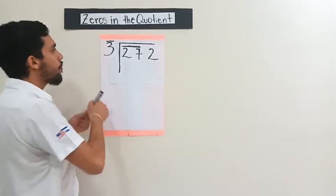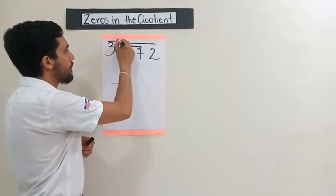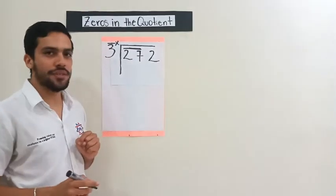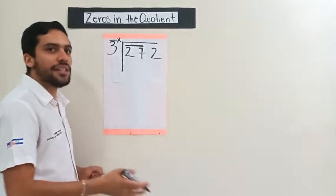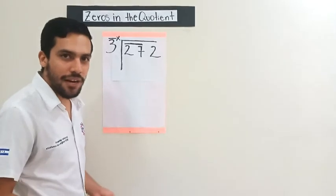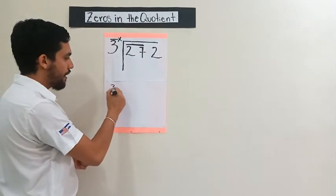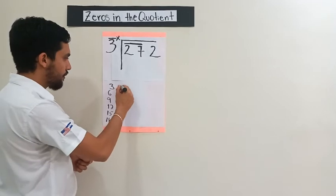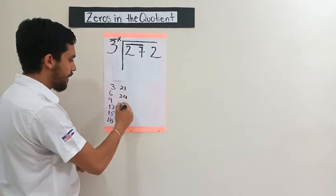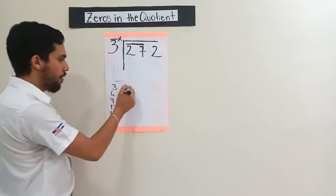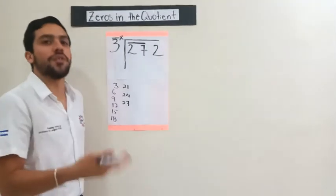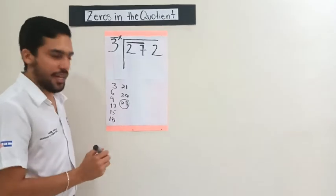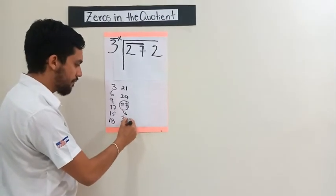The next step, we are going to start multiplying. You need to look for a number in the 3 times tables that approximates 27. We're going to write the times tables just in case you forgot: 3, 6, 9, 12, 15, 18, 21, 24, 27. From all these numbers, which number approximates or is the same as 27? Obviously 27, and we form 27 by saying 3 times 9.